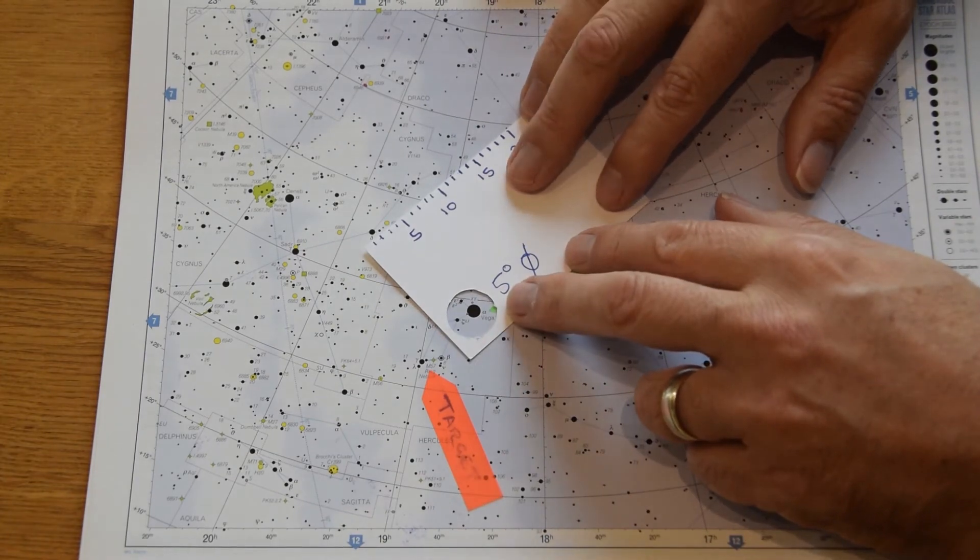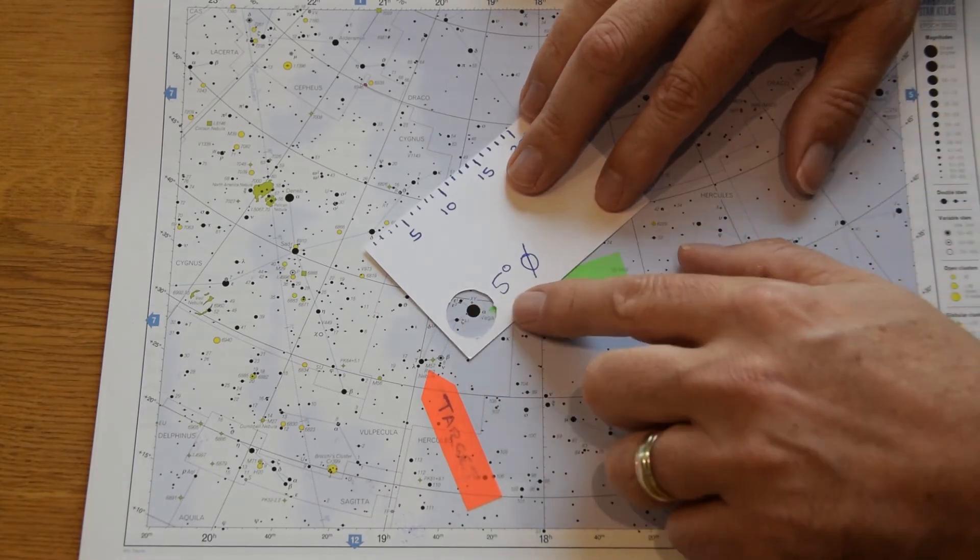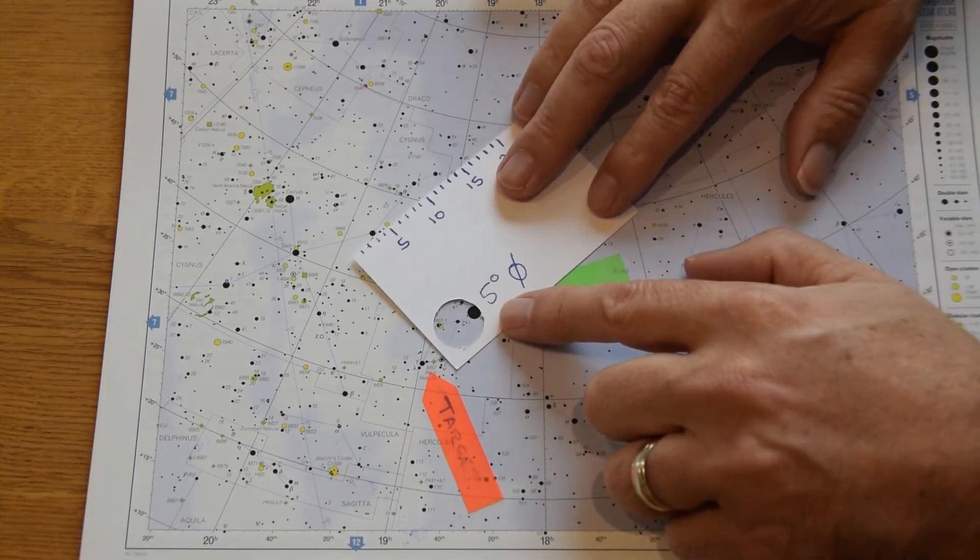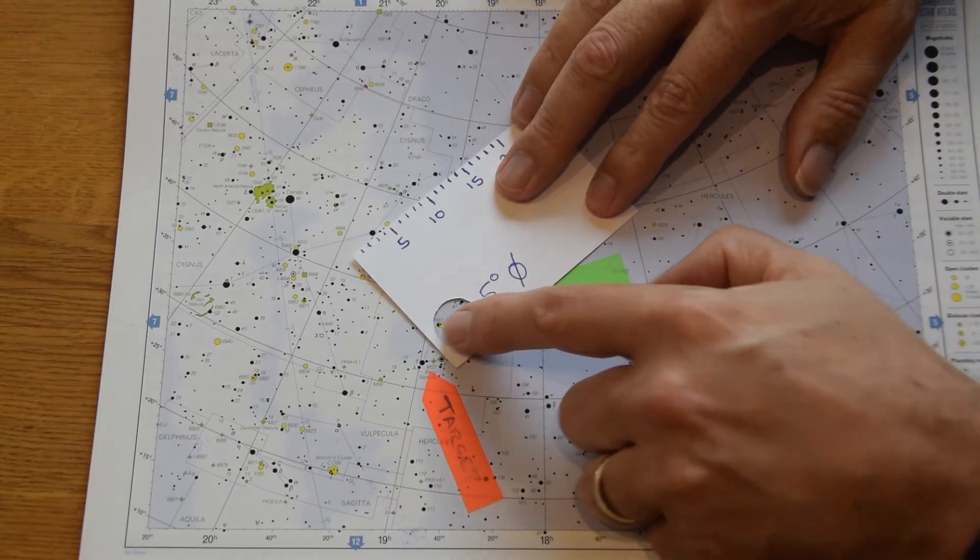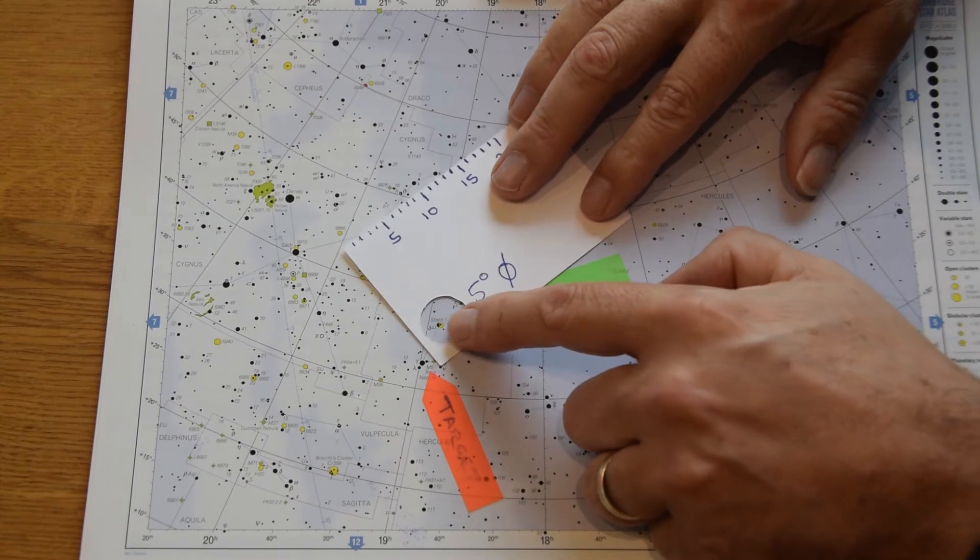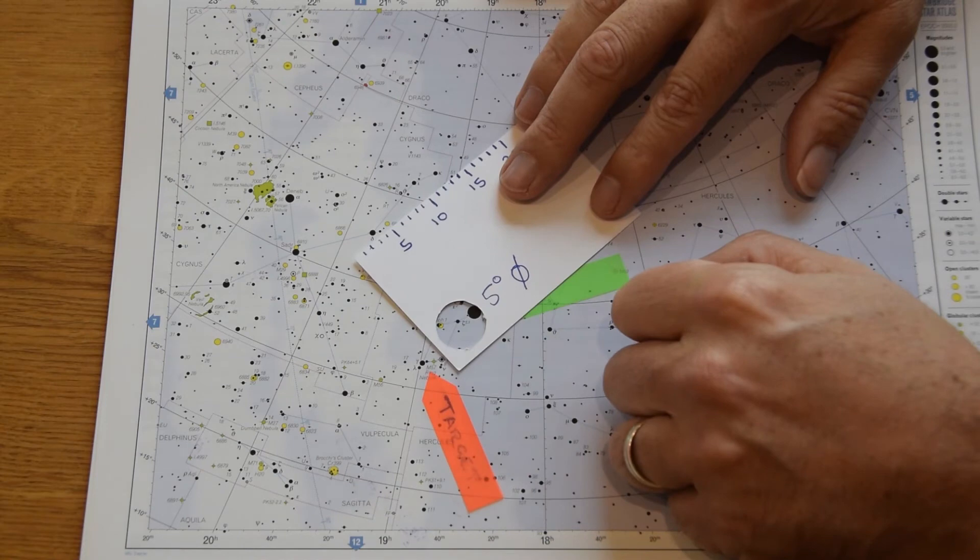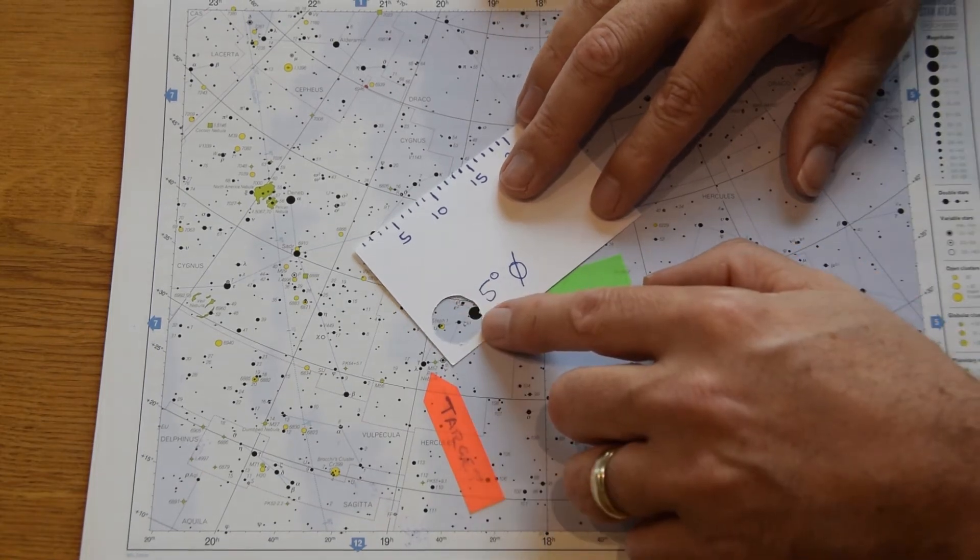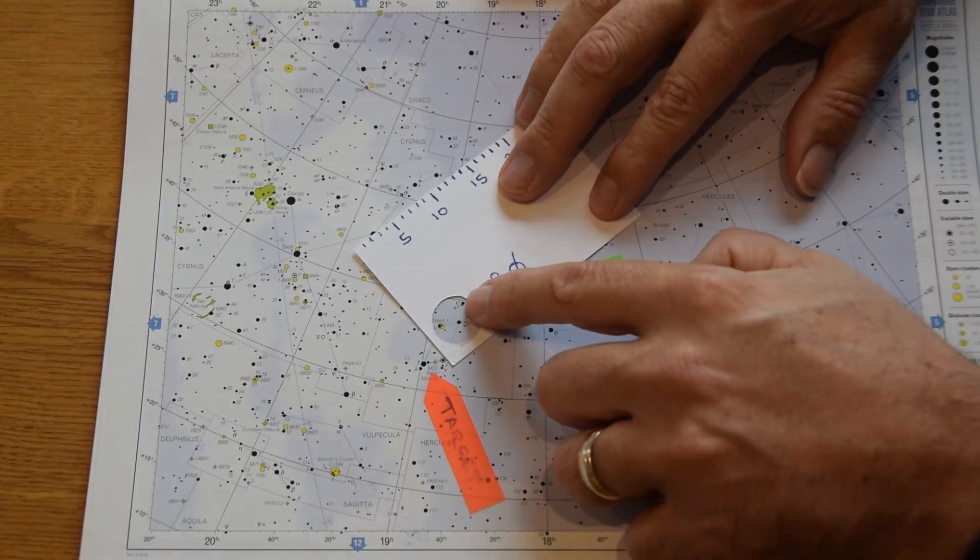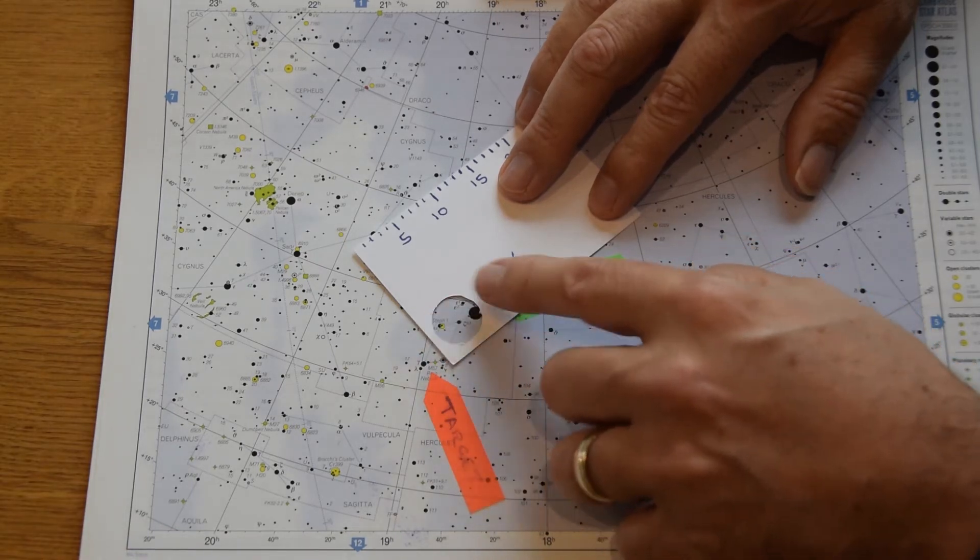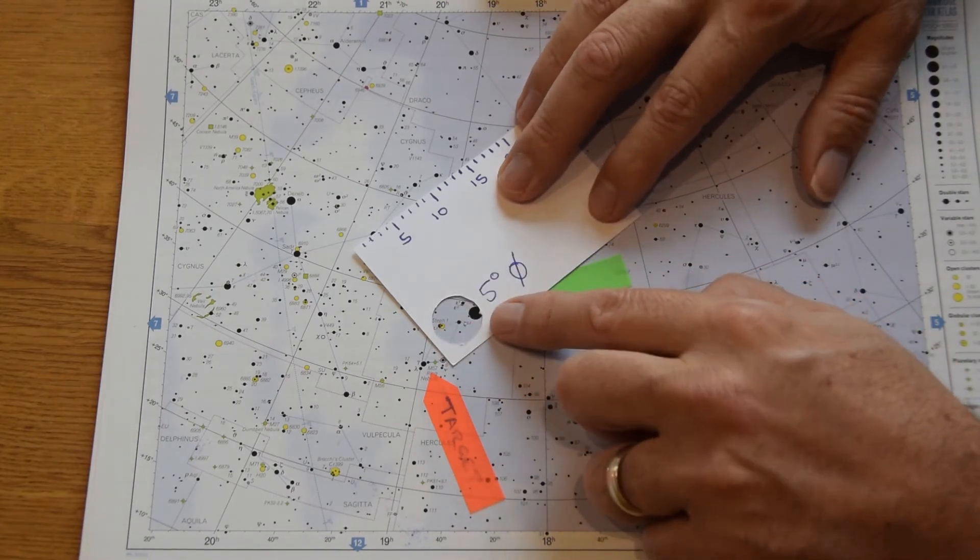Once you've got that then what we need to do is move down to the next star in the chain and that's called Zeta. And you'll see Vega still stays within the field of view and we've got Zeta and indeed the one across here which is Delta. So let's line up like that so that we've got Zeta in the middle. We can still see the double double as well so we've got these four or five stars and that's what we'll see in the finderscope.